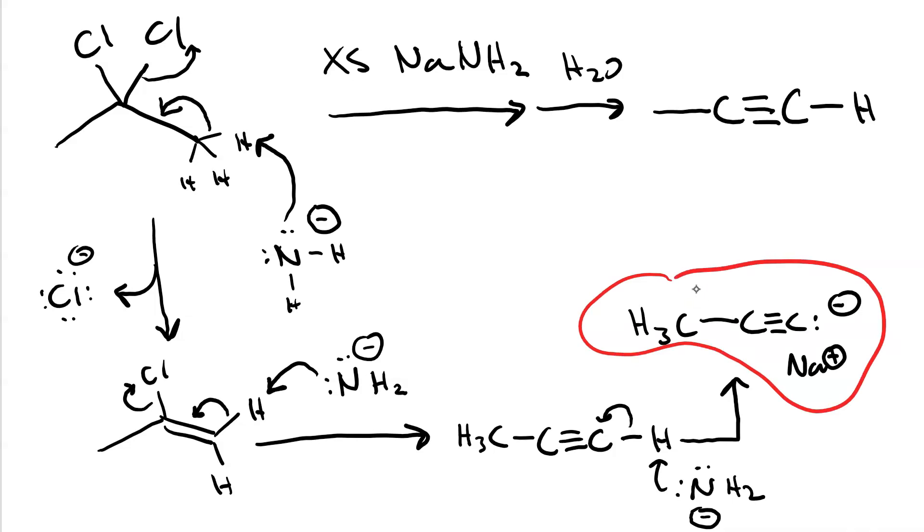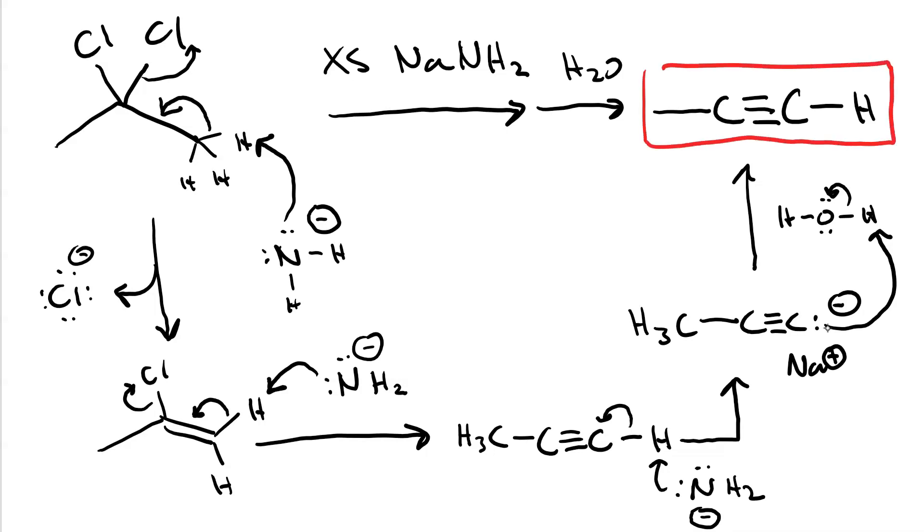The sodium propyanide precipitates out. Water is used to work it up as a weak acid to supply the proton to our final product. And we have propyne in high yield.